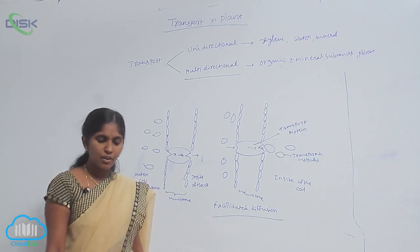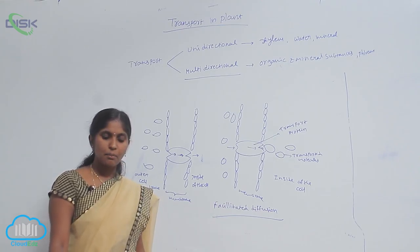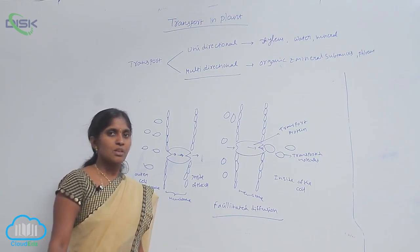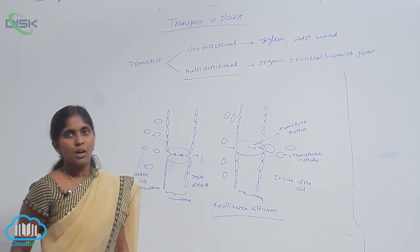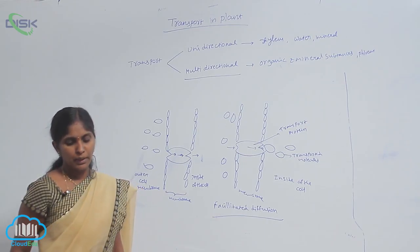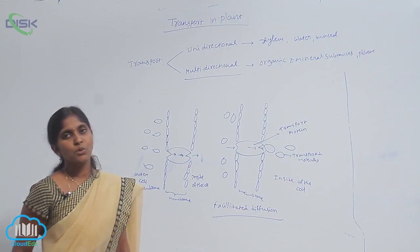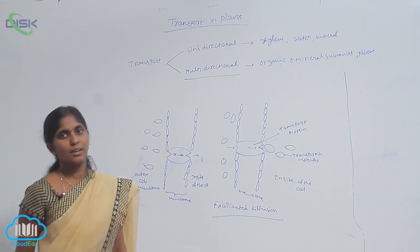Porins are proteins that form large pores on the outer membrane of plastids, mitochondria, and some bacteria. They allow molecules up to the size of small proteins to pass through by diffusion, meaning small-sized molecules and proteins can diffuse inside the cell via porins.